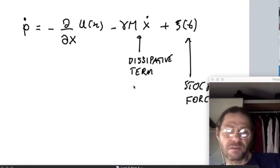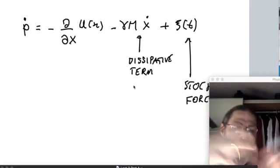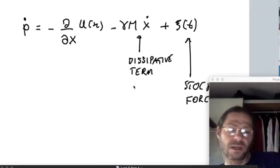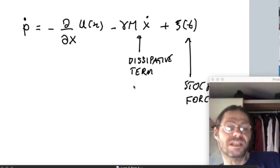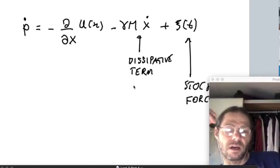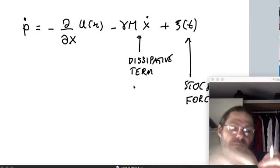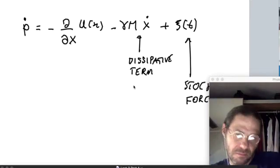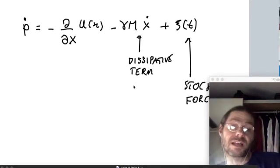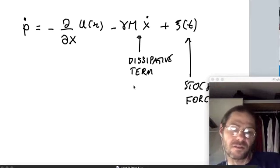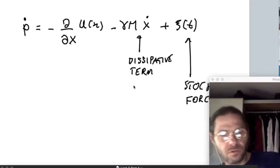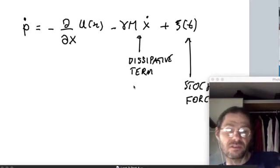This equation was valid in the limit in which the oscillations in the bath were taking place so fast that you would immediately lose memory of the interaction with the particle. The effect of the bath was supposed to be delta correlated.